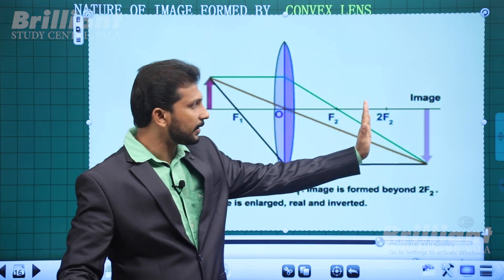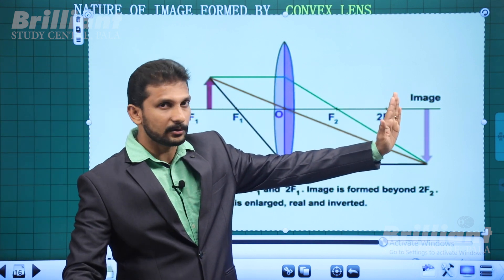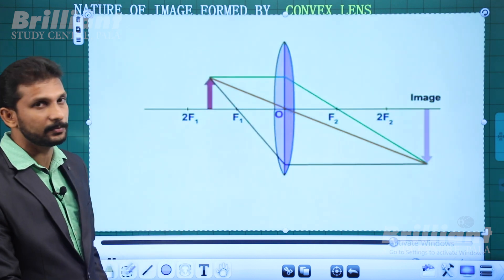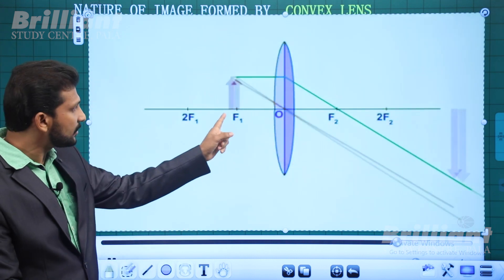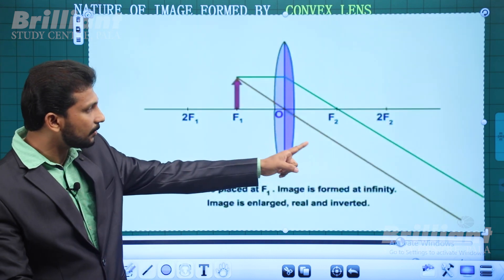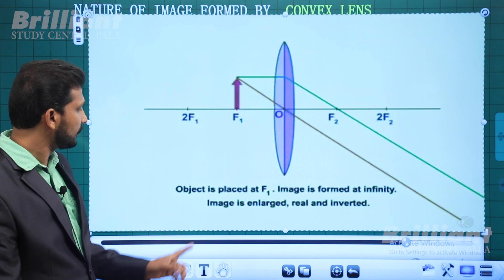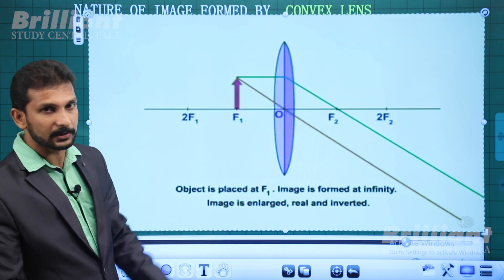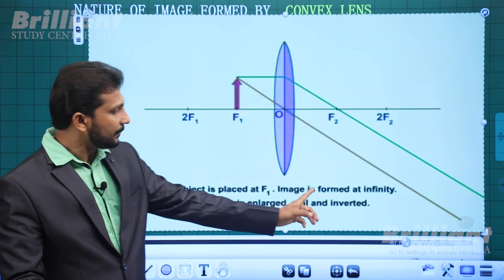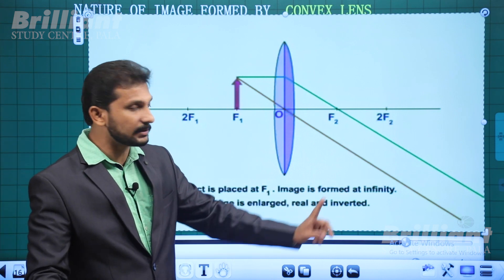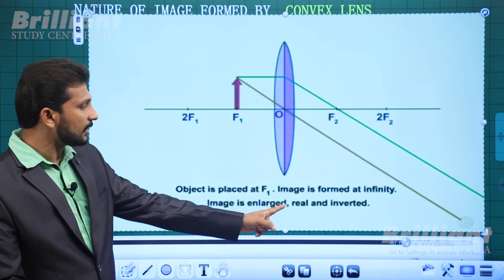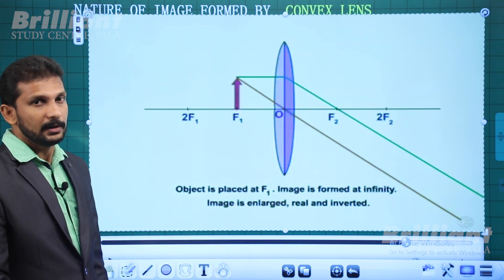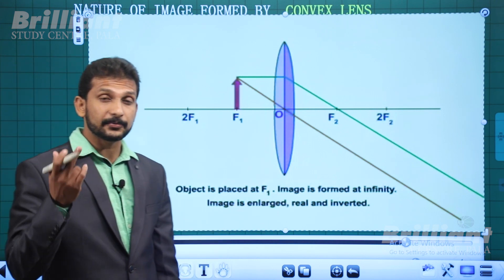When the object is placed at the focus, the image is formed at infinity. The image is very large, real, and inverted — the image is at infinity.